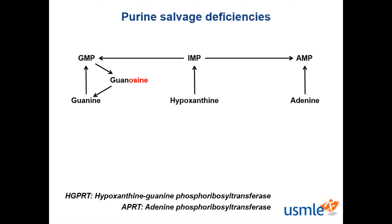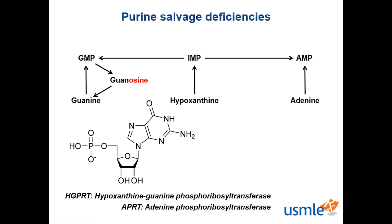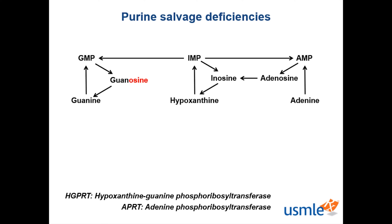Let's start with GMP. GMP can be broken down into guanosine. GMP has one phosphate, a sugar, and a base. If we remove the phosphate, we're left with guanosine, and then if we remove the sugar, we're left with a guanine base. We can do the same thing to get hypoxanthine back from IMP through inosine. AMP doesn't get converted back to adenosine; instead, it gets converted to hypoxanthine through the inosine intermediate. This requires the enzyme adenosine deaminase, or ADA, since we need to deaminate the adenosine to create the hypoxanthine base. Uric acid is then excreted in the urine.